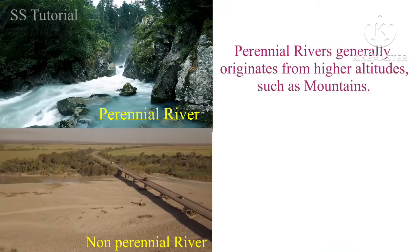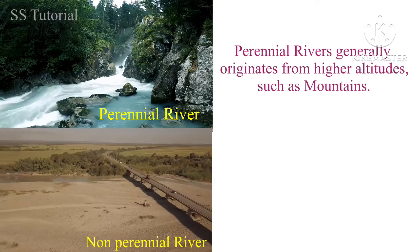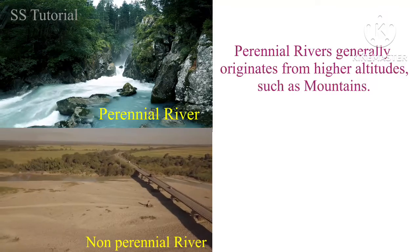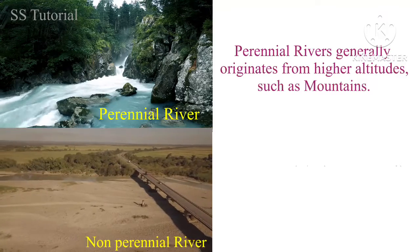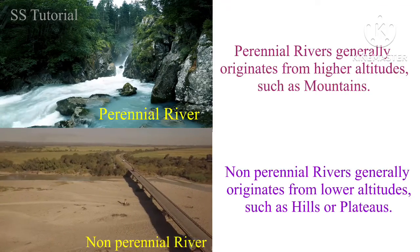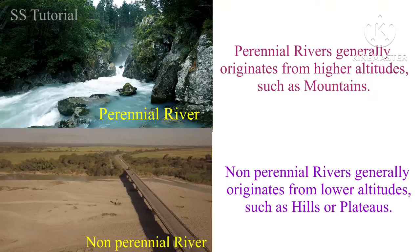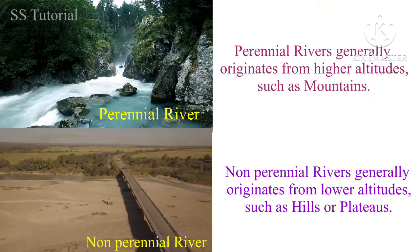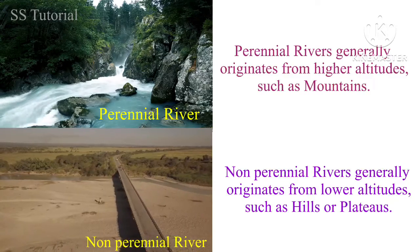Perennial rivers generally originate from higher altitudes such as mountains. Whereas non-perennial rivers generally originate from comparatively lower altitudes such as hills or plateaus.